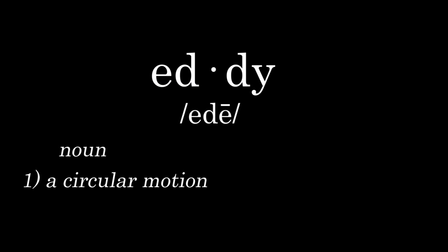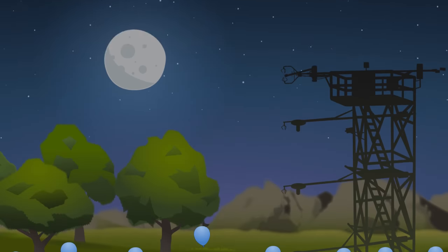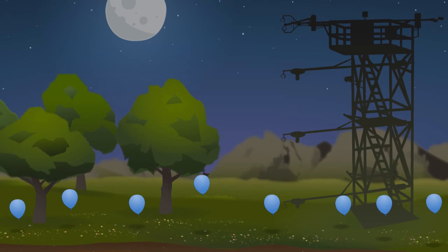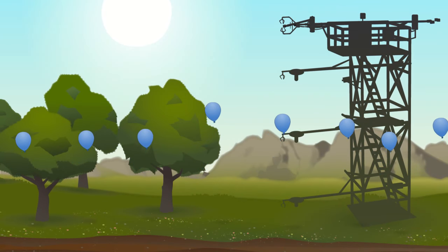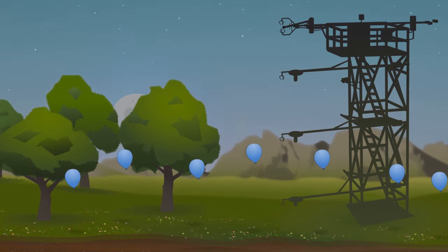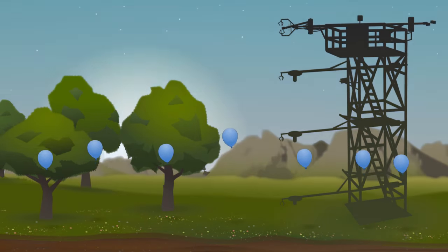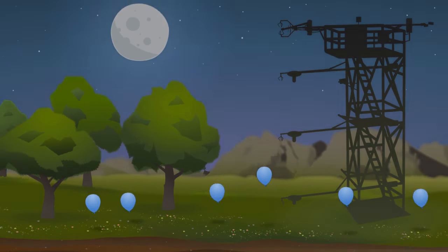An eddy is a circular motion of air created by temperature fluctuations. At night, without the sun, the air is cool and relatively stable. With the rising of the sun, the earth and air temperature begins to climb. This constant night and day fluctuation creates the wind we feel and the eddies of air that scientists measure.